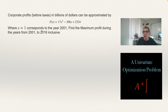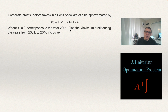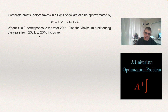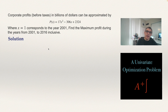Here, x = 1 corresponds to the year 2001, so x is in years and profit is in billions of dollars. We need to find the maximum profit during the years 2001 to 2016, inclusive. This is an optimization problem.